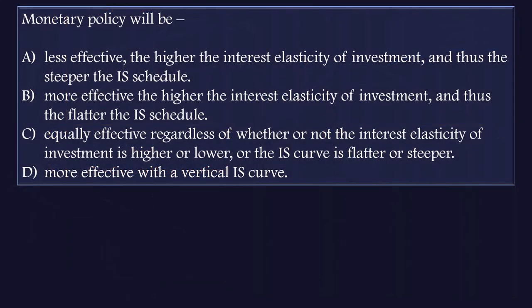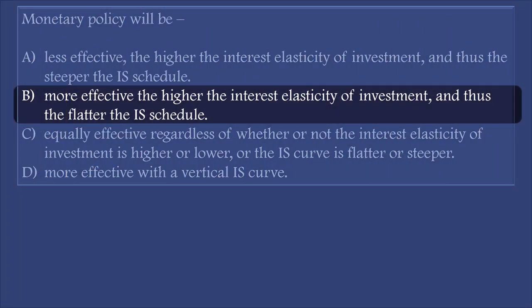Option B says: more effective the higher the interest elasticity of investment and thus, the flatter the IS schedule. So, option B is correct.